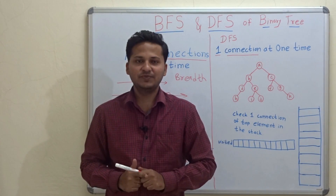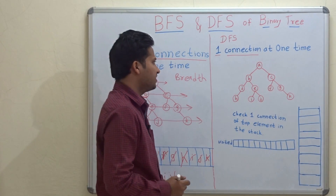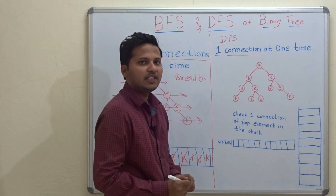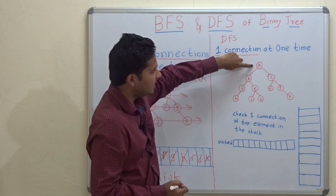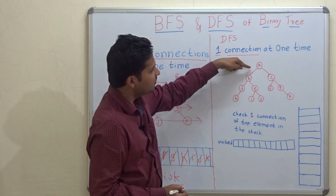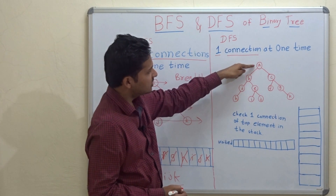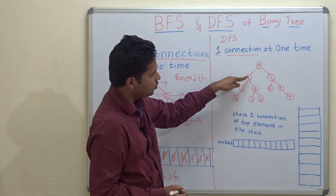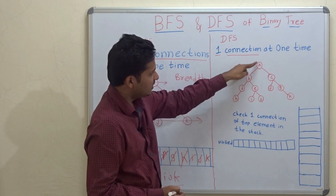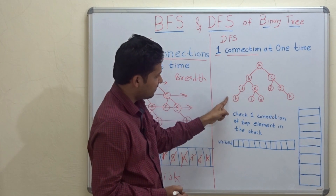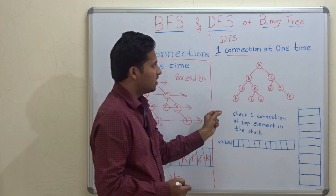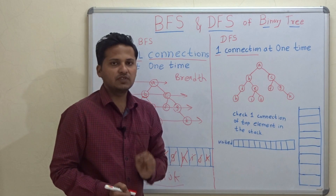Now let's check DFS. In DFS we have to check one connection at a time. For example, A has a left child and right child. You have to go with only one child at a time. So A's left child is B, and you start exploring B — you go in depth, like A, then B, then D, then D's left child H. This is why it is called depth first search.